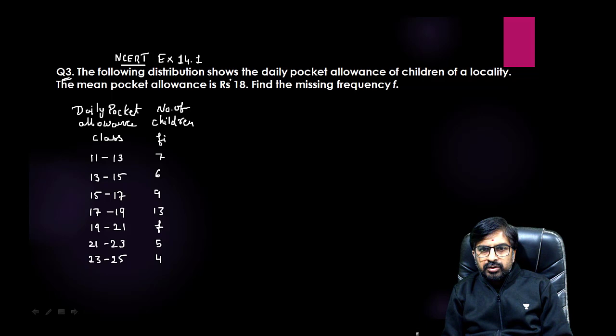The following distribution shows the daily pocket allowance of children of a locality. The mean pocket allowance is rupees 18. Find the missing frequency f. They had given us mean and now we need to find out a missing frequency. We are going to solve this by simple direct method because the terms are very small and that will be easy for us.